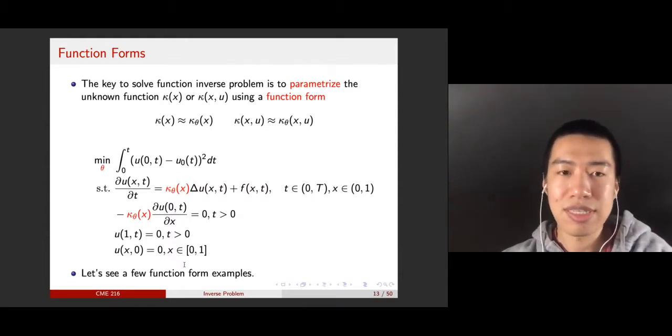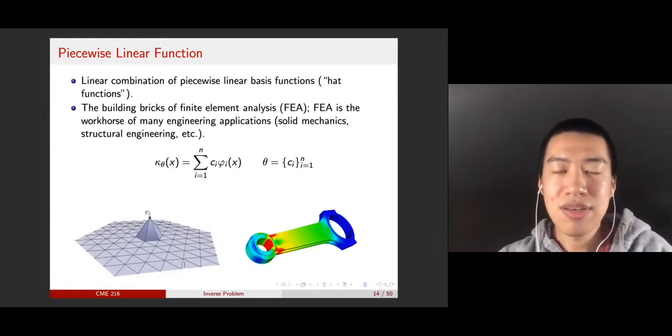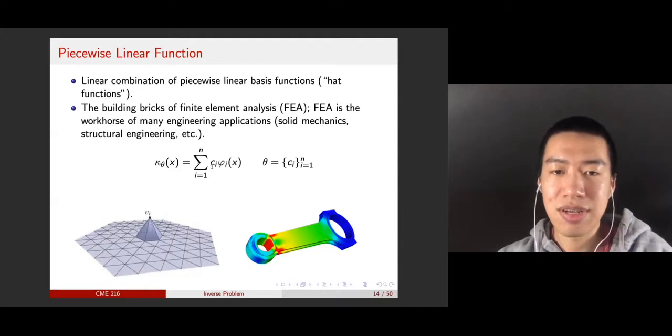So, let's consider some concrete examples. The simplest example is the piecewise linear function, where you parametrize your unknown function using piecewise linear functions. Piecewise linear functions are the building blocks for finite element analysis, where you use a lot of piecewise linear or piecewise polynomials to approximate your unknown functions in the weak form of partial differential equations. Simply put, it's a linear combination of piecewise linear basis functions, where in 2D you have hat functions, and in 1D you have non-zero linear functions on each interval.